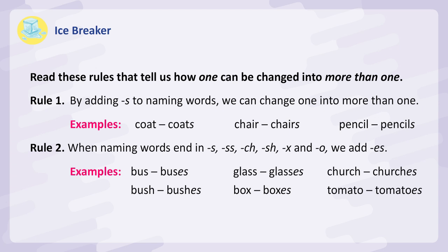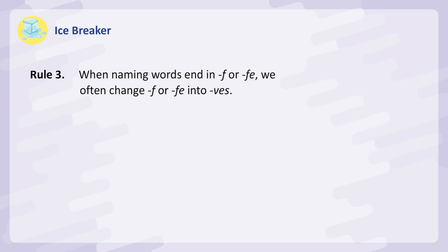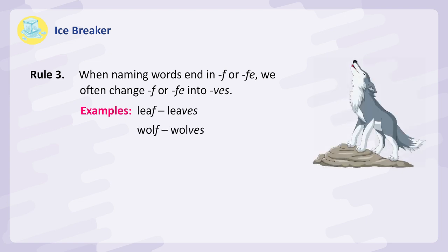Rule 3: When naming words end in F or FE, we often change F or FE into VES. Examples: Leaf — Leaves. Wolf — Wolves. Knife — Knives.